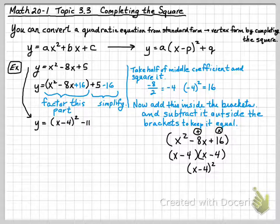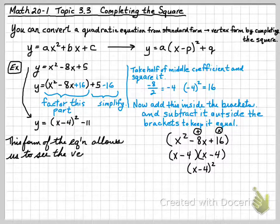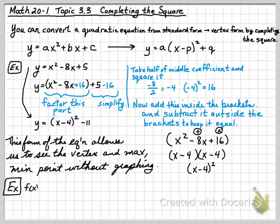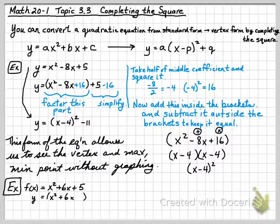Every time, we take half of that middle coefficient, square it, and put that inside the brackets. Whatever we're adding inside, we've got to subtract outside. This form of the equation allows us to see the vertex and the maximum or minimum point without graphing it. Here's another example: f(x) equals x squared plus 6x plus 5. We put x squared plus 6x in brackets and leave the 5 on the outside.